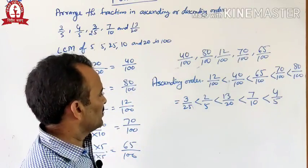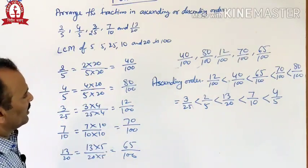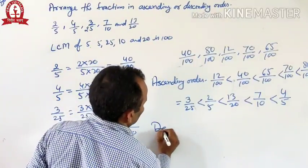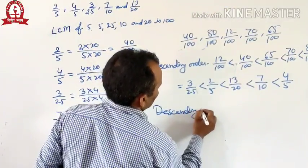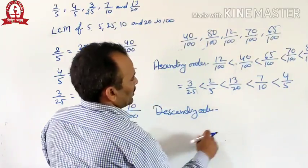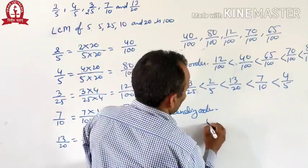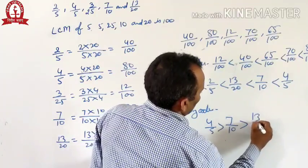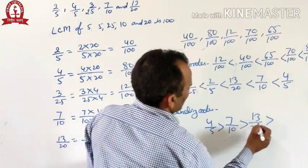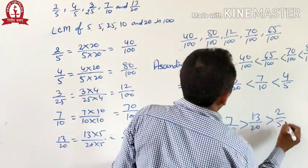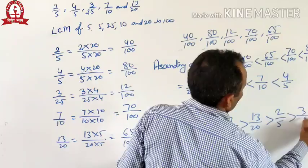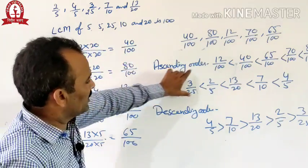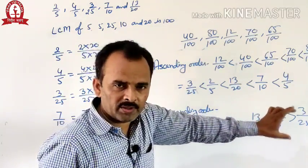If you are asked to arrange the fractions in descending order, then we reverse the order. In descending order, the greatest fraction comes first: 4 by 5, then 7 by 10, then 13 by 20, then 2 by 5, and at last 3 by 25. This is the arrangement of fractions in ascending order and this is the arrangement of fractions in descending order.